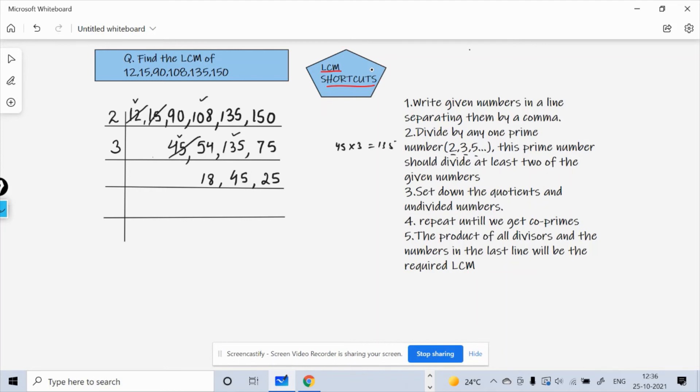After this we again can check a prime number. Shall I take 3 again? Okay, so we know that 3 sixes are 18, and then 15, 3 into 15 is 45, and 25 doesn't come in the table of 3. We can't divide it, so I write 25 as is.